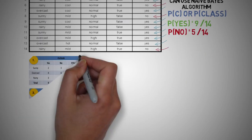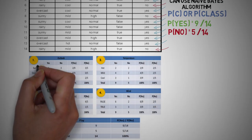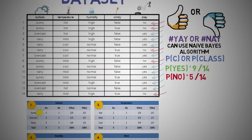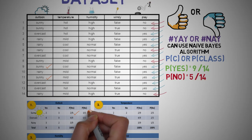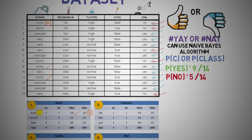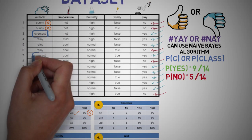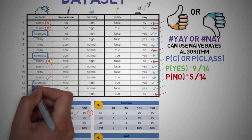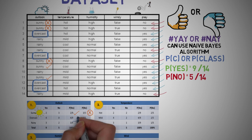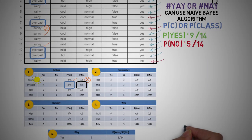Now we also need to calculate the individual probabilities with respect to each feature or weather condition in our dataset. So for sunny, the probability that it is sunny given that play is yes is 2 out of 9 — because from 9 yeses, it is only sunny twice, as we can see here. The probability that it's sunny given a no is 3 out of 5, since from the 5 no-play days, only 3 days were sunny. For the overcast outlook, we count 4 days with a yes and 0 days with a no — so 4 out of 9 for yes and 0 out of 5 for no respectively. We can compute these probabilities for all the other features. You can see how easy this is.